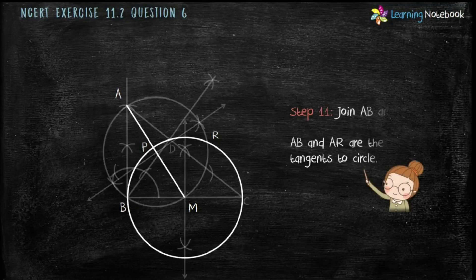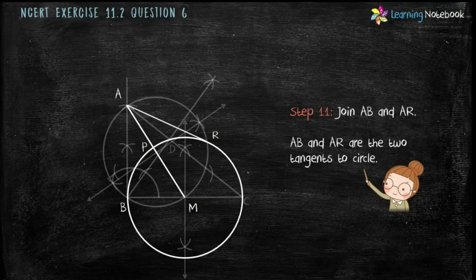Now students last step is join AR and AB. AB and AR are the two tangents to the circle.